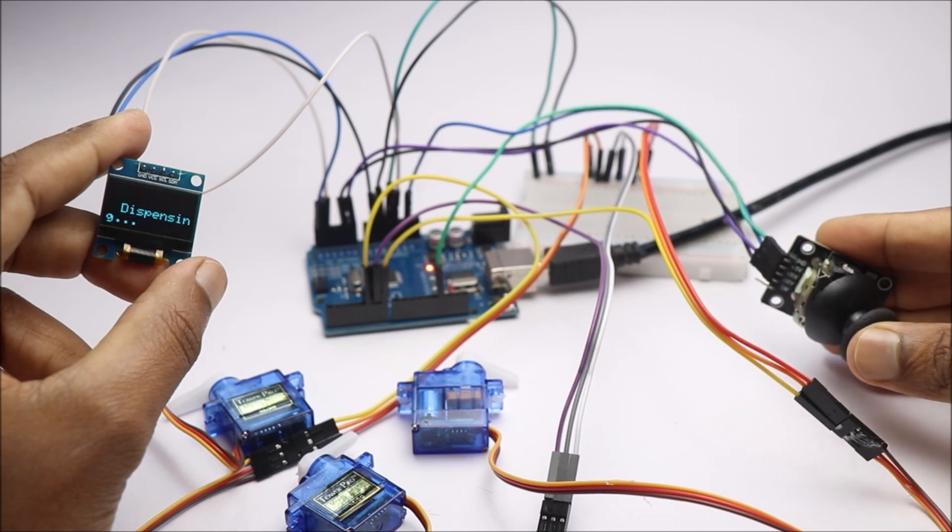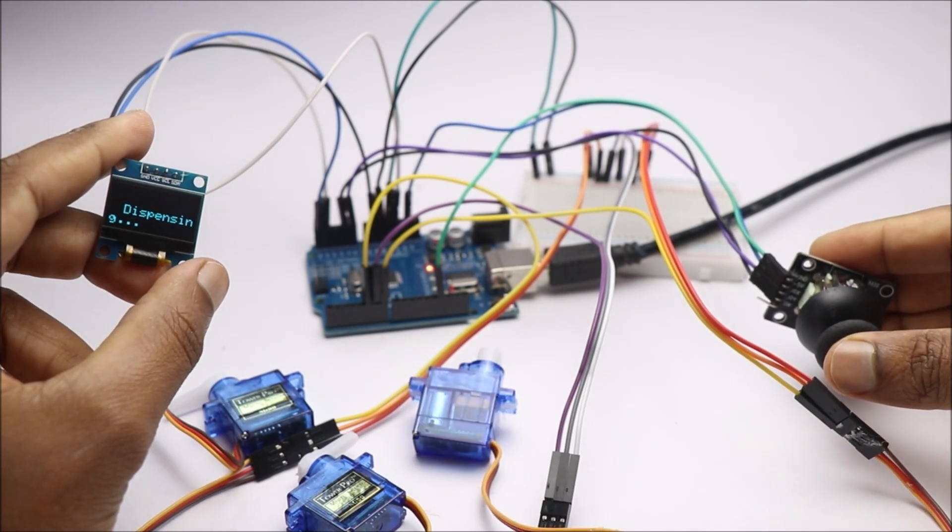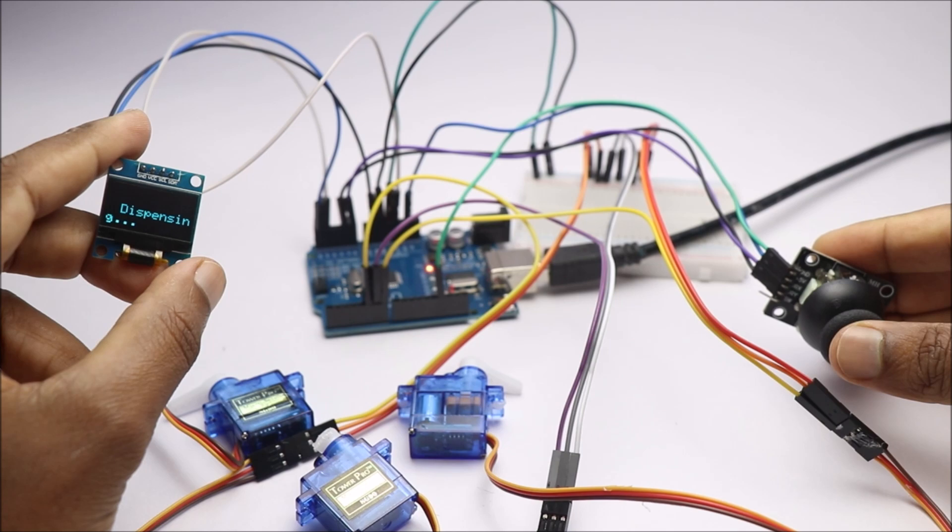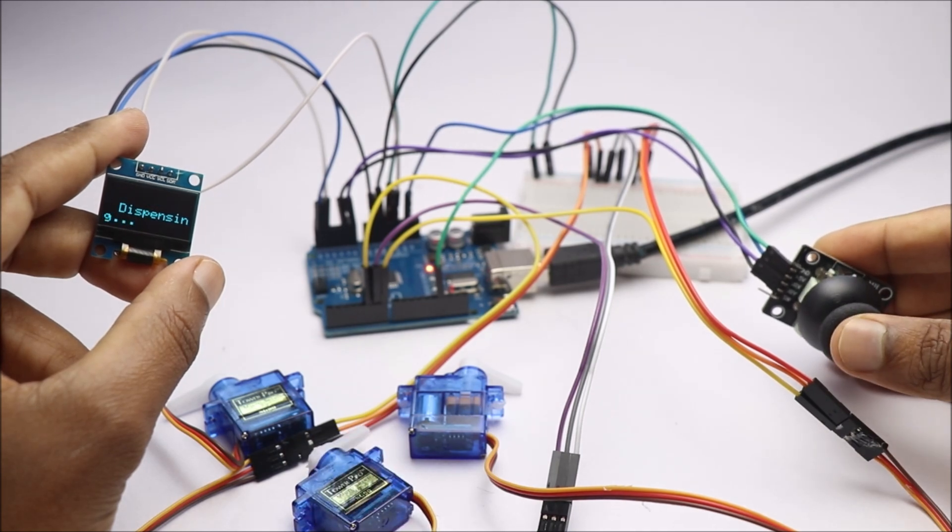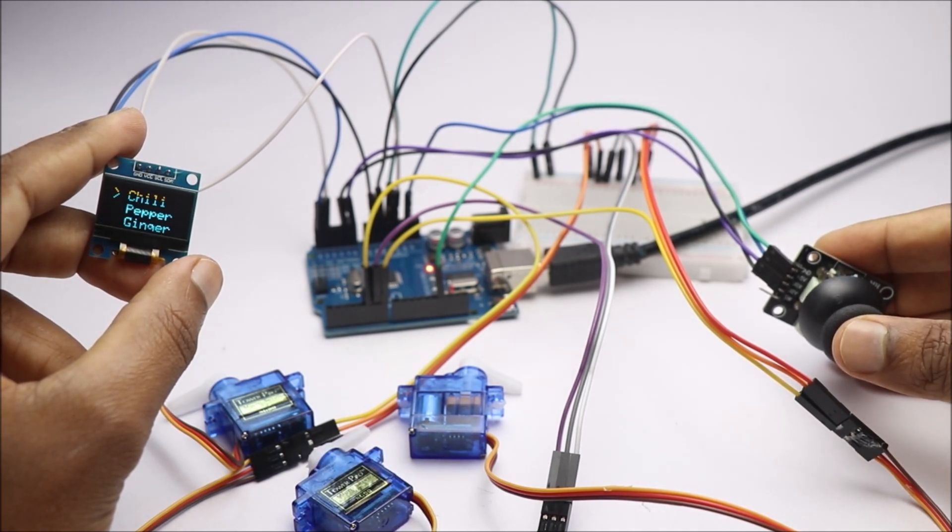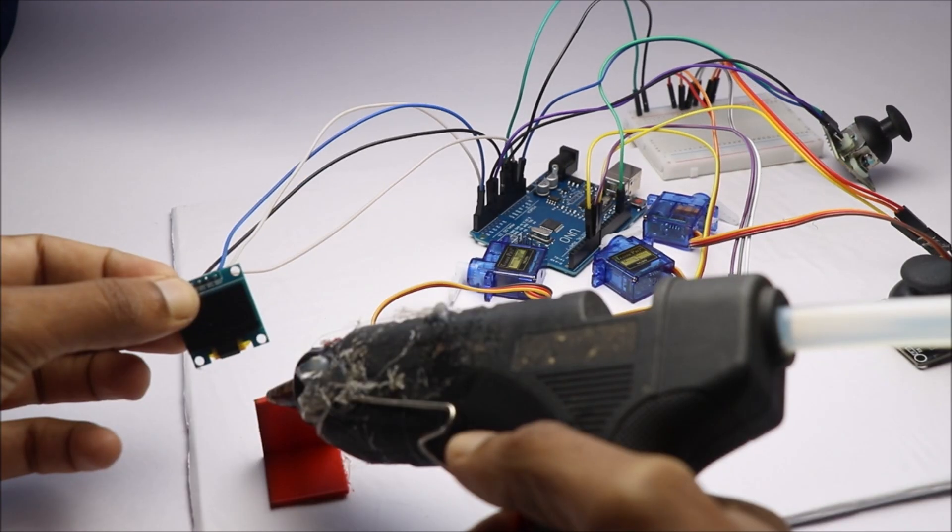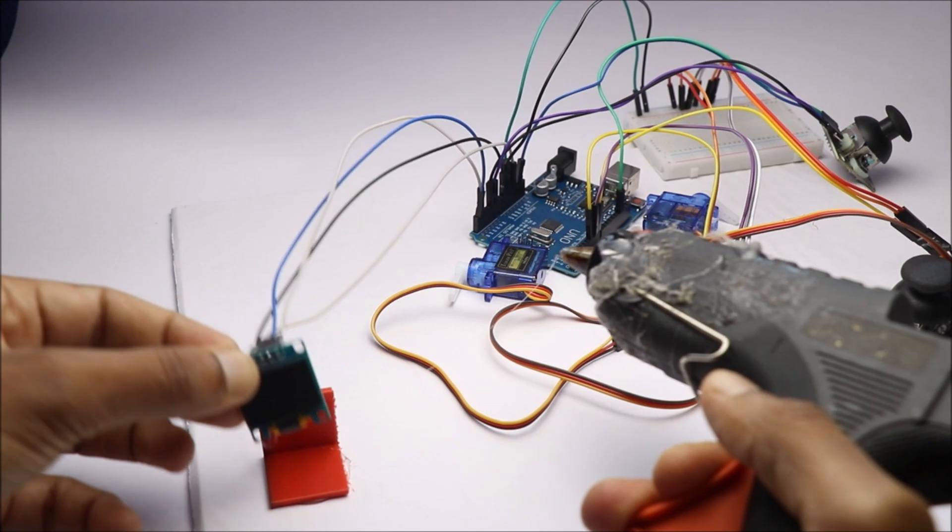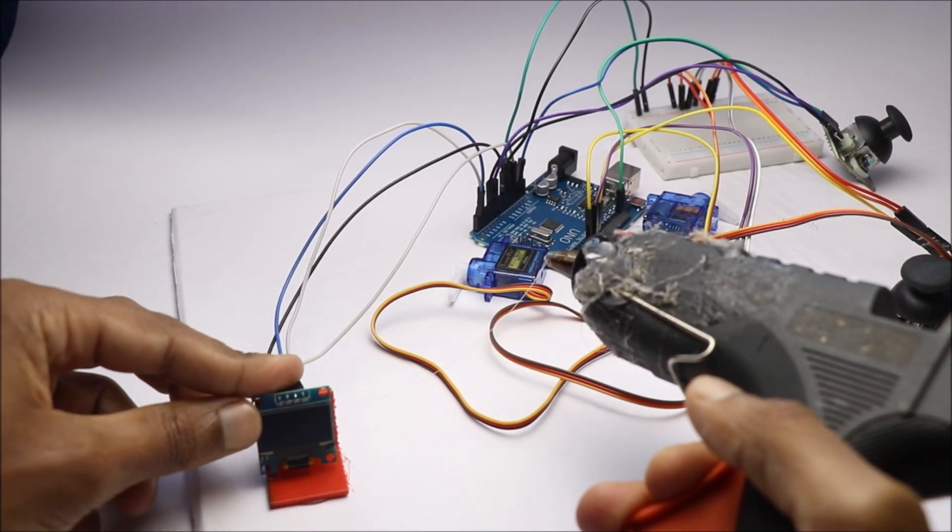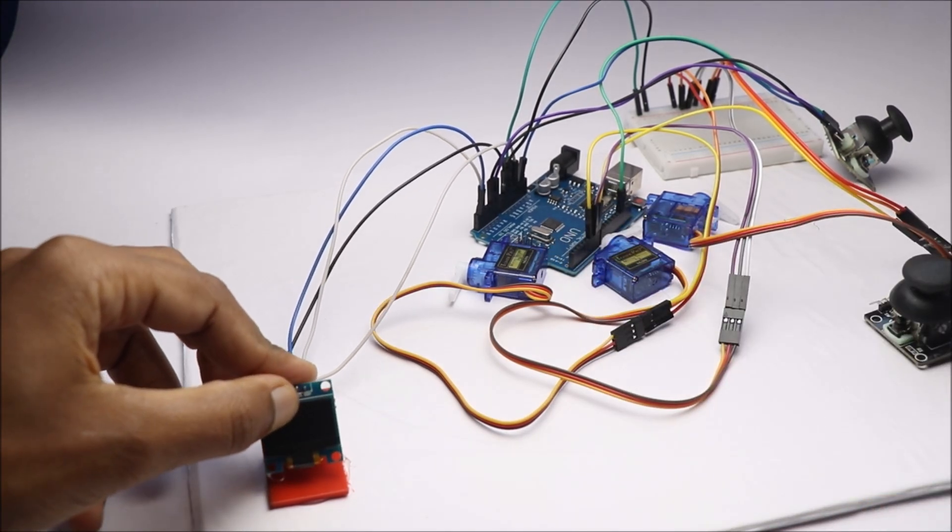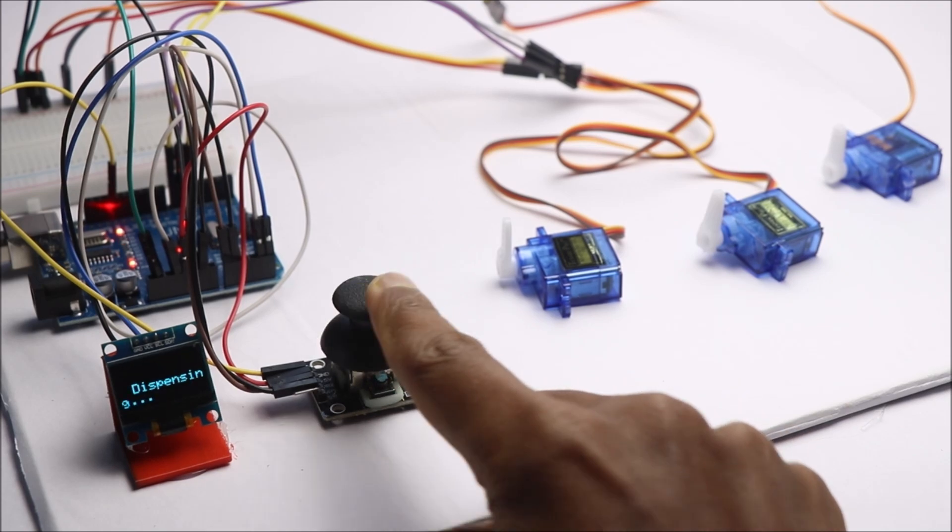Once this is complete, test the code and circuit as shown here. The OLED displays three options and you can navigate these menus by pressing up and down button. To select the option, you can press left or right button on joystick, and the respective servos will work accordingly.